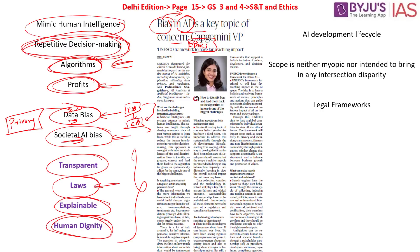Basically, there are fixed standards, fixed parameters, fixed guidelines, rules and regulations that must be respected by the company creating such complex algorithms. If any of these fixed parameters are violated, then there is violation of the ethical principles of artificial intelligence, says this article.